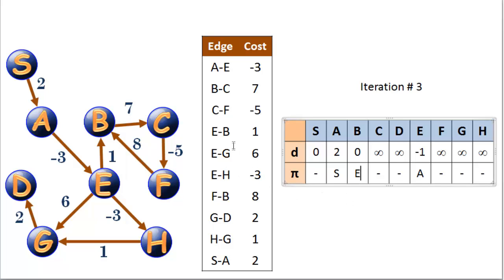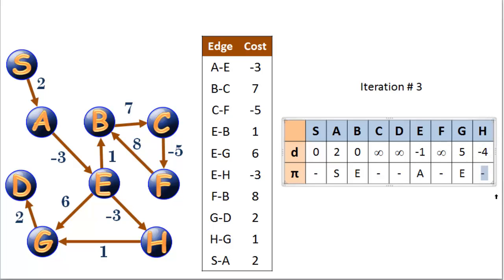Next, E to G with a cost of 6: it costs us negative 1 to get to E, so adding 6 gives G a cost of 5 with predecessor E. And E to H with a cost of negative 3: we're at negative 1 to E, so negative 1 plus negative 3 gives H a cost of negative 4 with predecessor E. That concludes our third iteration.